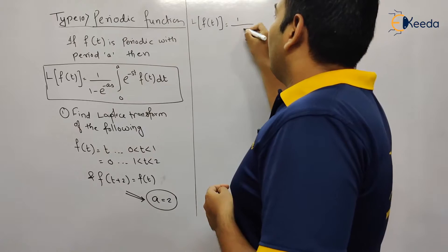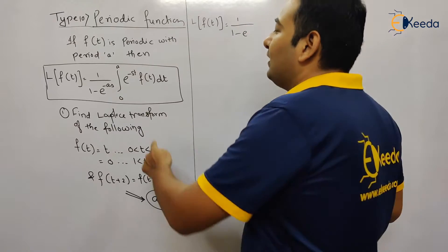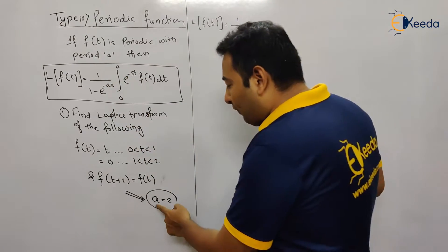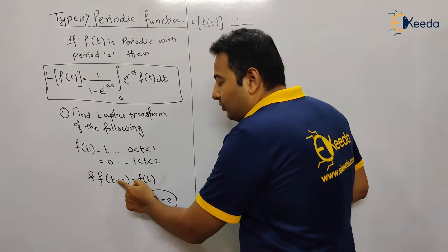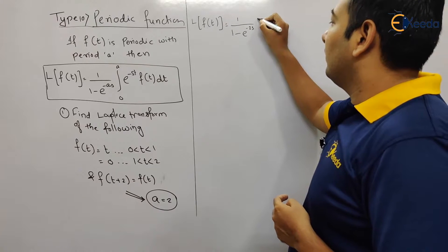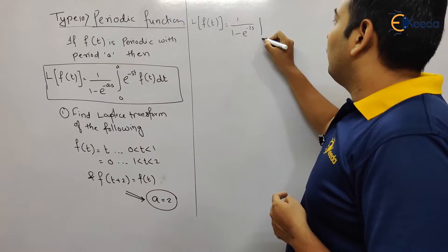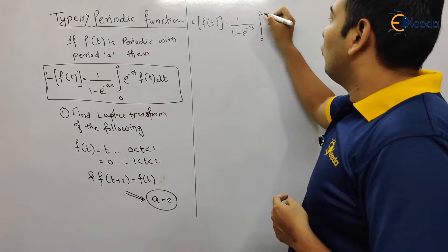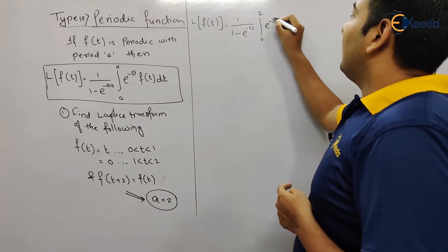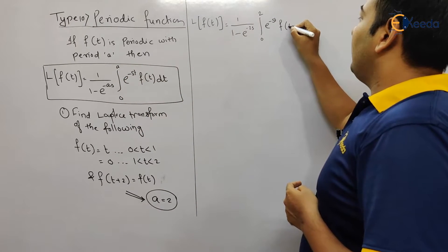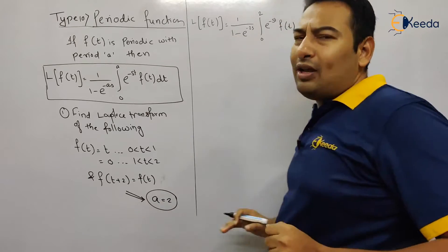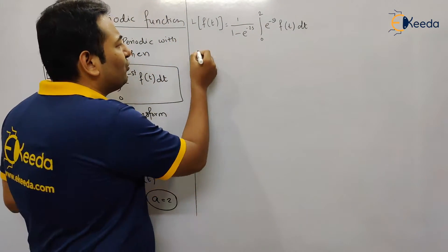The Laplace formula for a periodic function is: 1 upon (1 minus e^(−as)) times the integral from 0 to a of e^(−st) f(t) dt. The value of a is the period, and from this problem we got the period as 2. So the integral will be from 0 to 2. Just put values into the formula and the work is done.